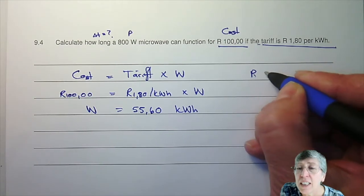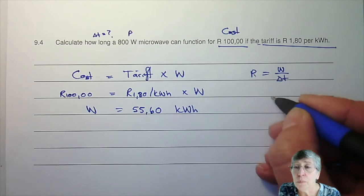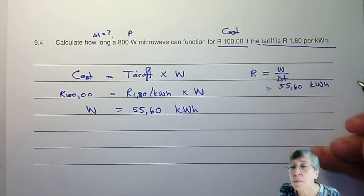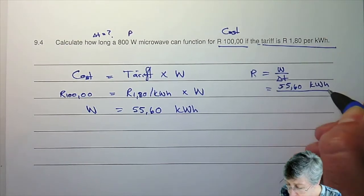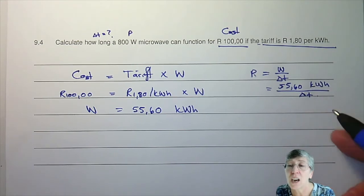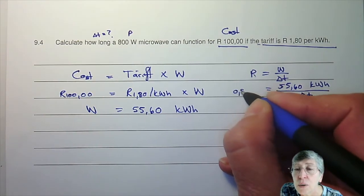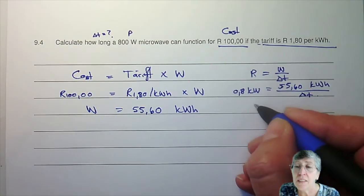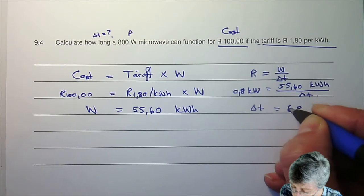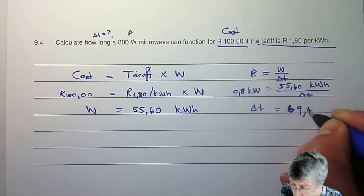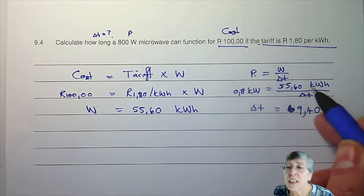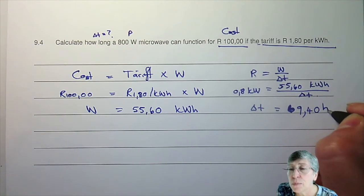Now using P equals W over delta T with that energy of 55,60 kilowatt hours — not joules — we are solving for the time. The power must be entered as 0,8 kilowatts to match the kilowatt hours unit. That gives a time of 69,40. Since we put energy in kilowatt hours and power in kilowatts, the time is in hours.